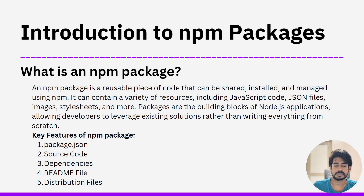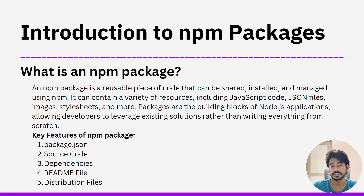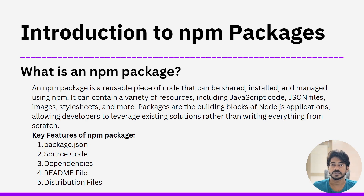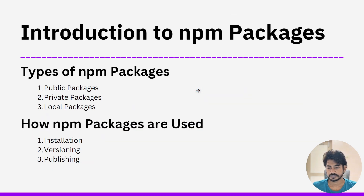Then we have the distribution file. Some npm packages include compiled and minified versions of their source code for distribution. This is especially common in front-end libraries where the original source code is transformed into more optimized code for production use. For example, when I developed the Ottony report, I don't publish everything — I make a bundle in distribution form as a single file so I don't miss any files.